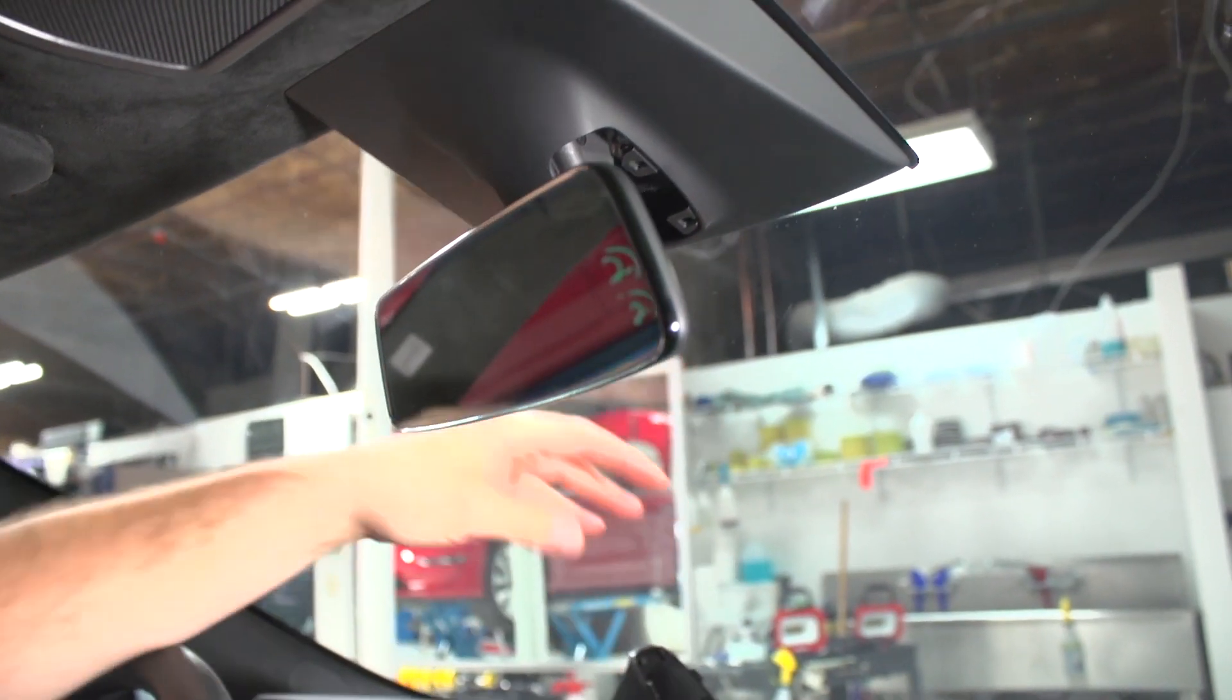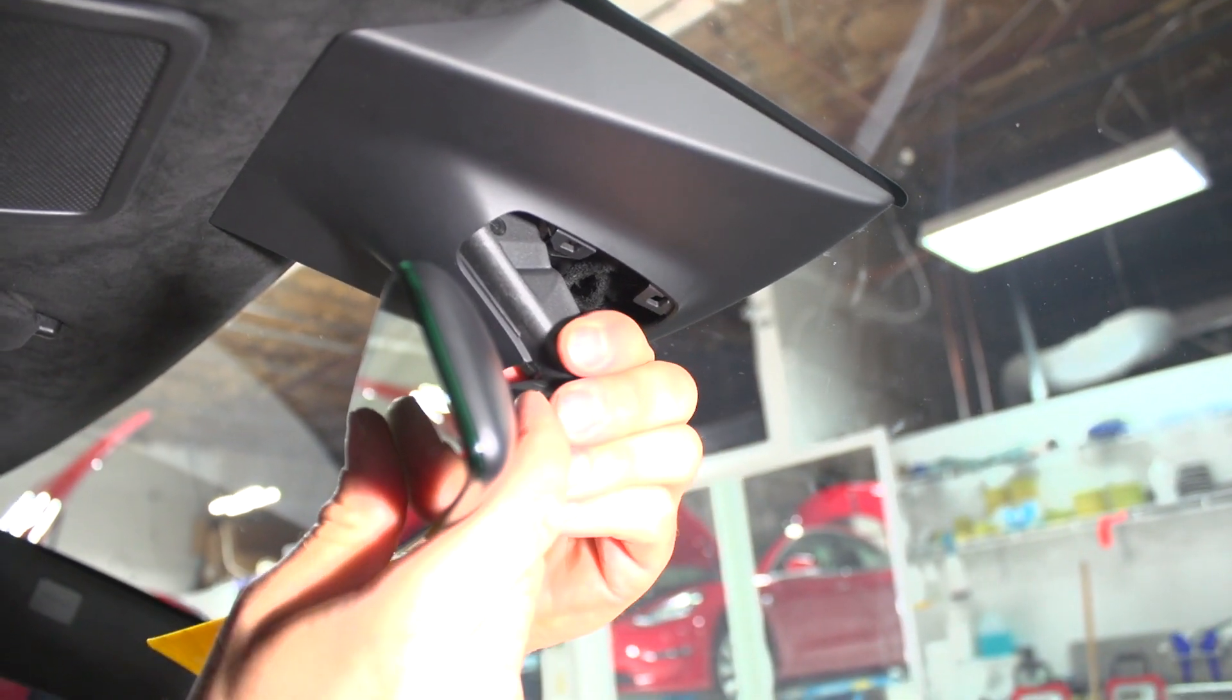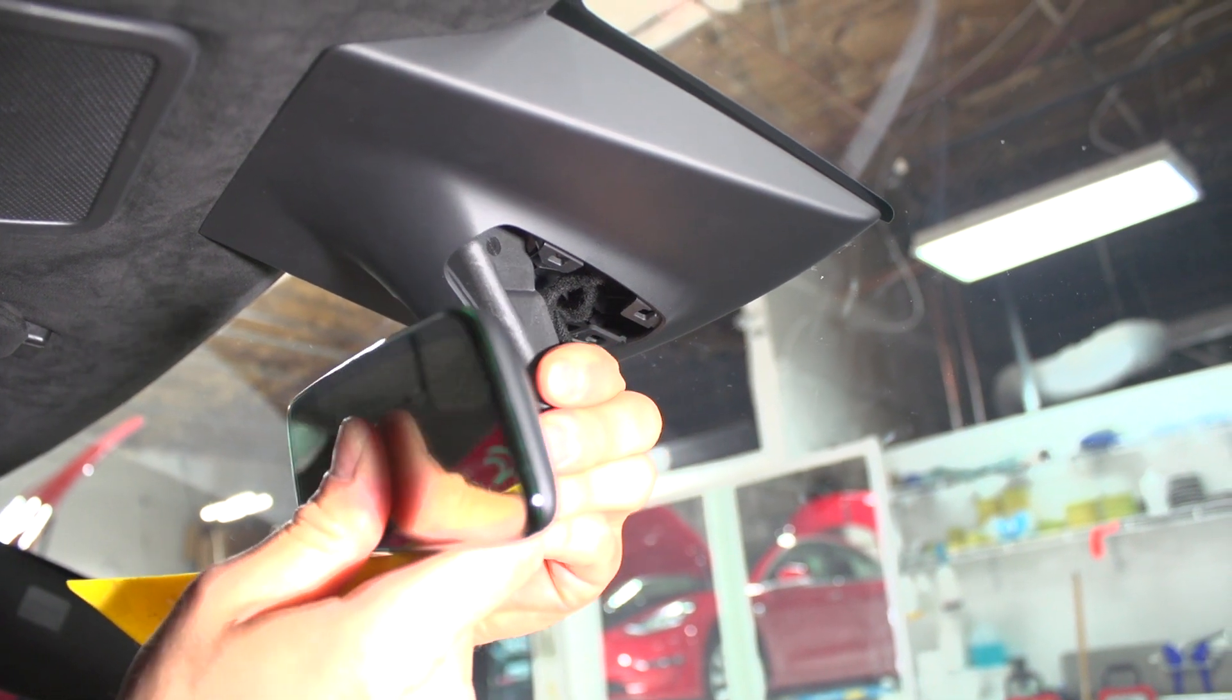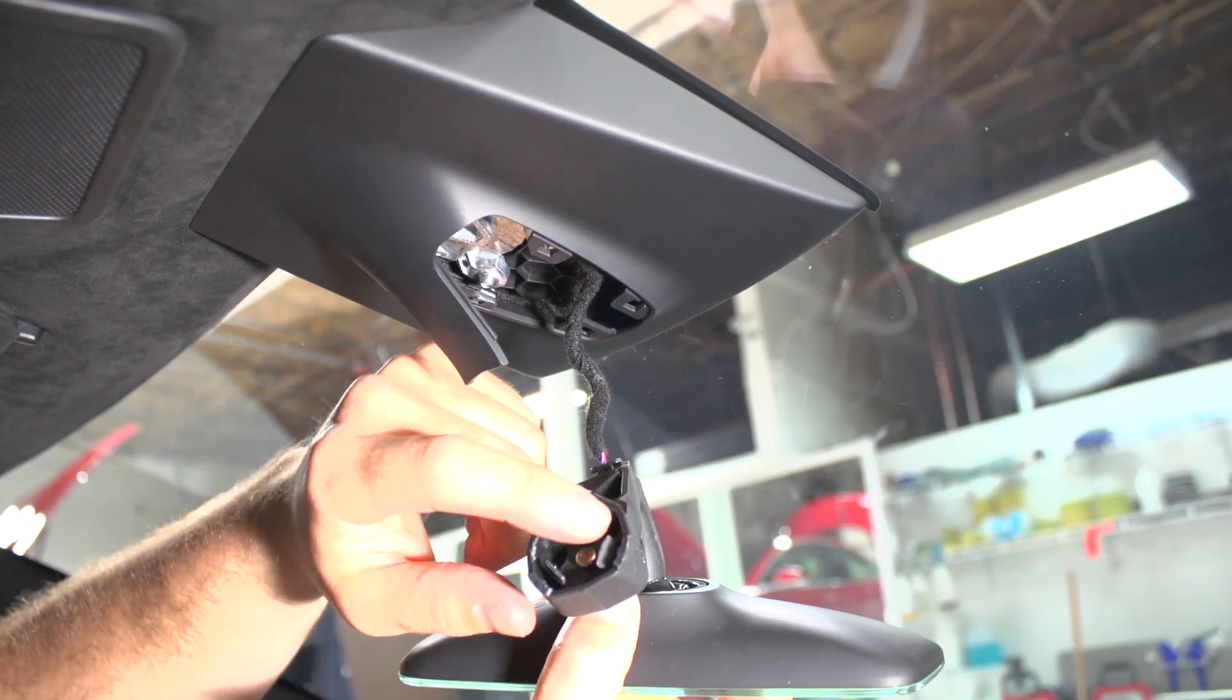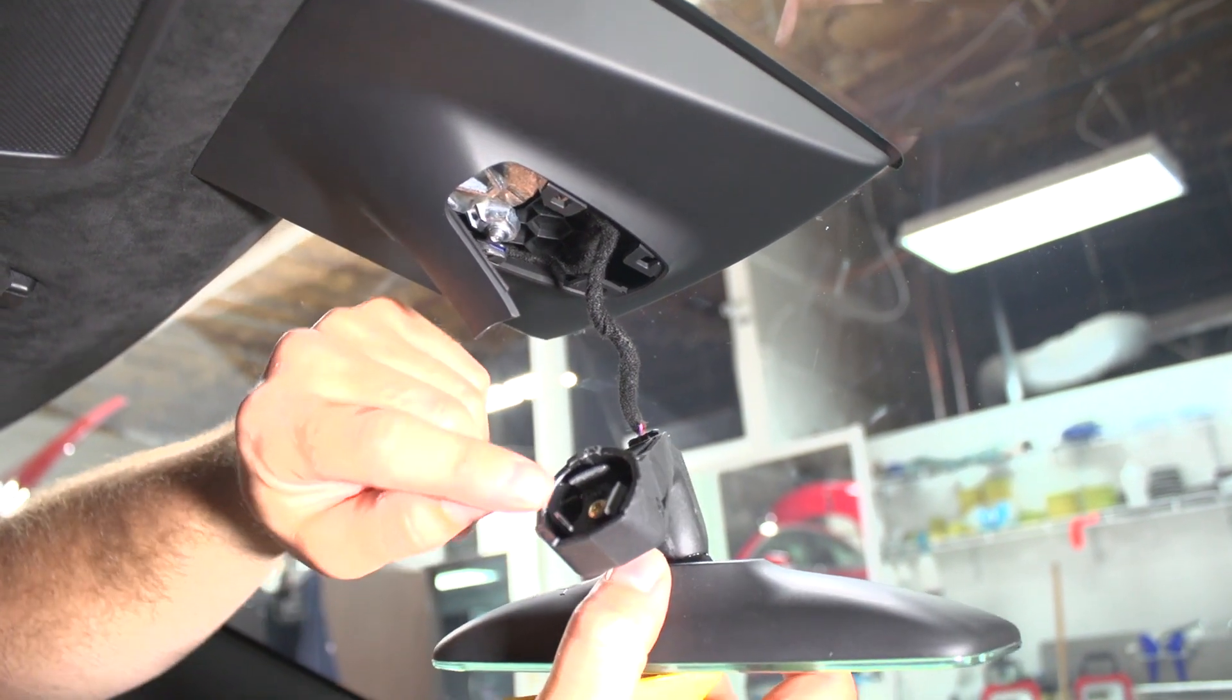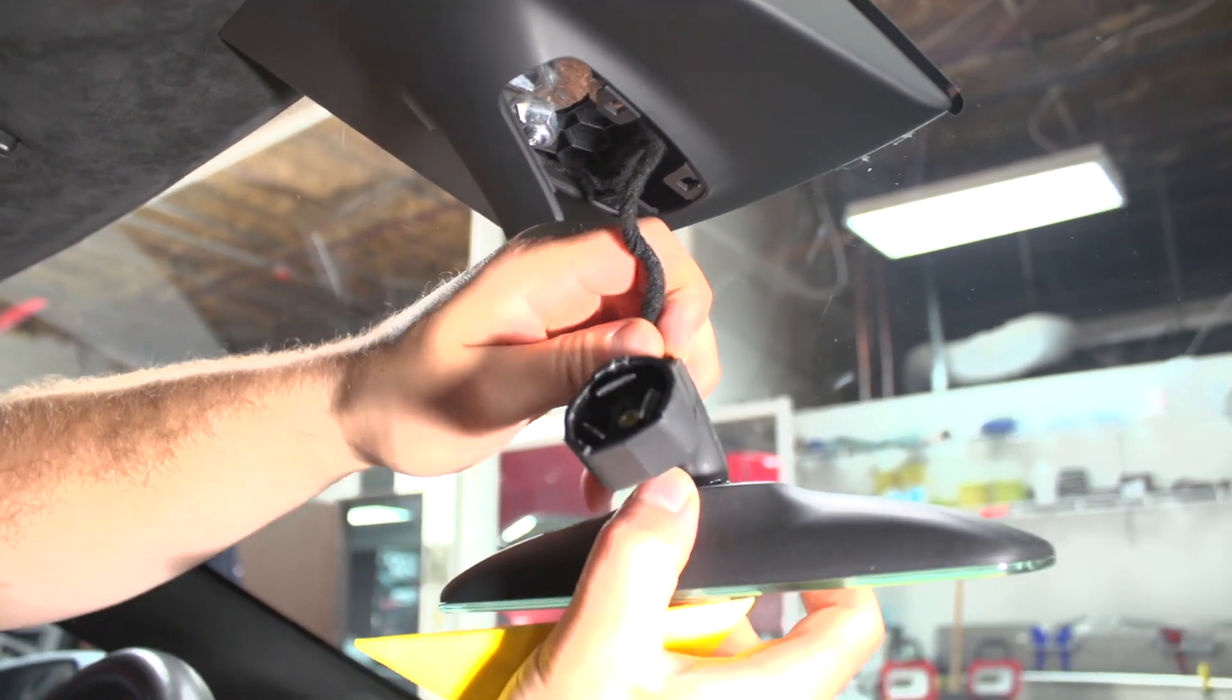Next thing we're going to do is we are going to rotate the mirror 90 degrees and it comes right off. There's an item here that locks with that guy. Unplug it.